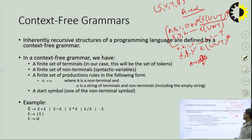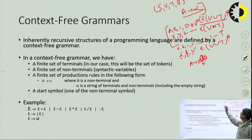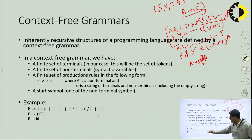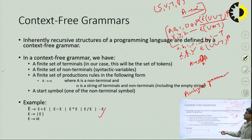Entirely recursive structures of a programming language are defined by context-free grammar. Mathematically, context-free grammar consists of a finite set of terminals T, a finite set of non-terminals V, a finite set of production rules P in the form A produces alpha, and a start symbol S. This is an example of an ambiguous grammar — also called an operator grammar — where A produces alpha and alpha is a collection of V union T.